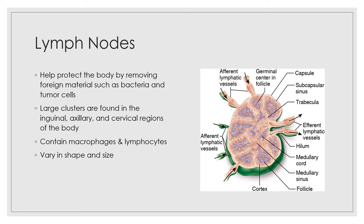Lymph enters the convex side of the lymph node through afferent lymphatic vessels. It then flows through a number of sinuses that meander through the lymph node and finally exits from the node at its indented or concave region — the hilum — via efferent lymphatic vessels. Because there are fewer efferent vessels draining the node than afferent vessels feeding it, the flow of lymph through the node is very slow, like sand flowing through an hourglass. This allows time for lymphocytes and macrophages to perform those protective functions.